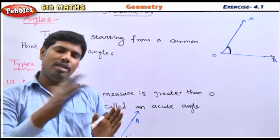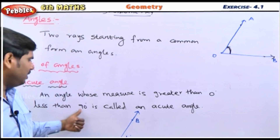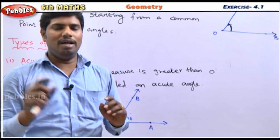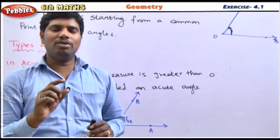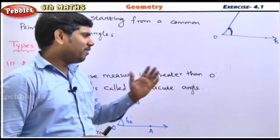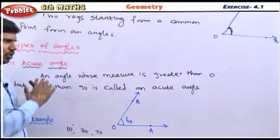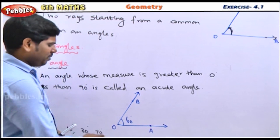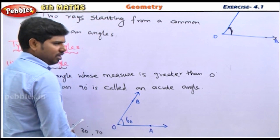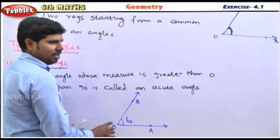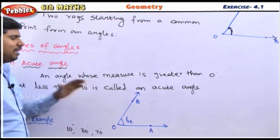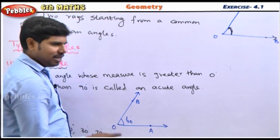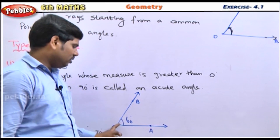An angle greater than 0 degrees but less than 90 degrees is a small angle — it's called an acute angle. It's between 0 and 90 degrees. OA and OB are two rays, and if the angle is less than 90 degrees, greater than 0 but less than 90 degrees, it is called an acute angle.